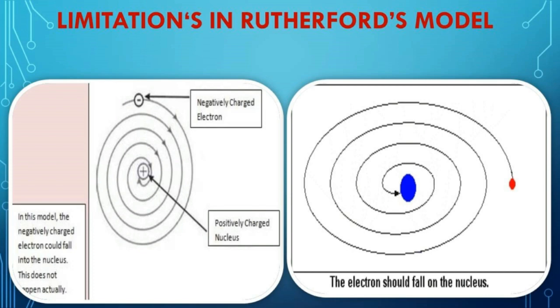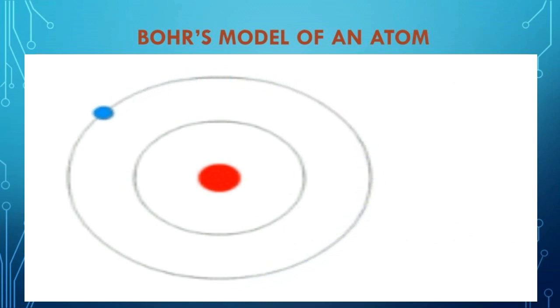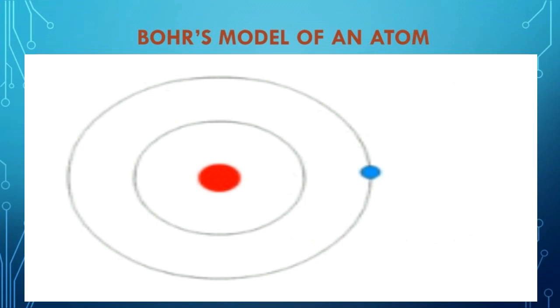The next model is Bohr's model of an atom. In 1913, Niels Bohr, a Danish physicist, explained the stability of the atom in a different manner. The main postulates are: electrons revolve around the nucleus in stationary circular paths called orbits, shells, or energy levels. While revolving in an orbit, an electron neither loses nor gains energy. Bohr's model also explains that an electron in a shell can move to a higher or lower energy shell by absorbing or releasing a fixed amount of energy.